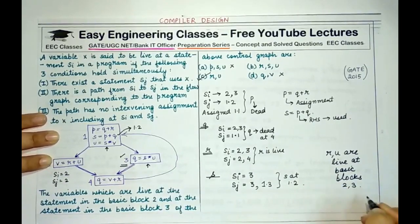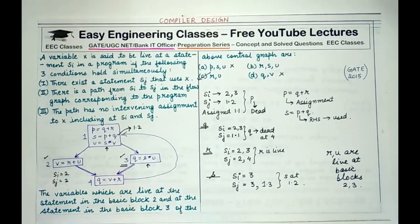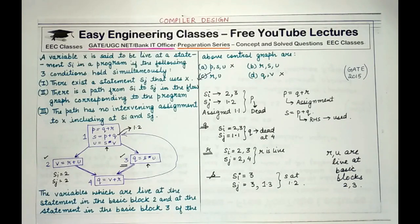Live variable analysis is very important in compiler design for code optimization. It allows you to eliminate all dead code and reduce both the complexity and running time of your program. Thank you for watching — please like and share the video, and stay tuned to Easy Engineering Classes for more computer science tutorials.